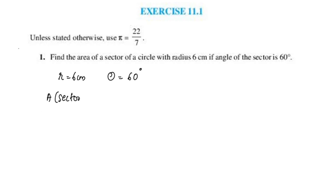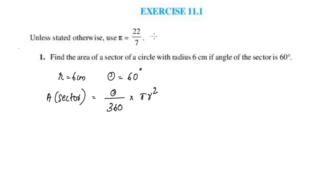If you have a minor sector, what is the equation? Theta by 360 into pi r squared. Unless stated otherwise, use pi equal to 22 by 7. That is the 22 by 7 value.